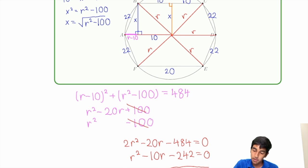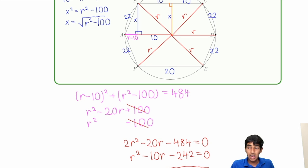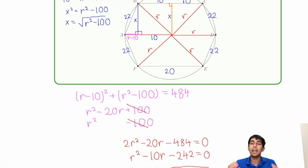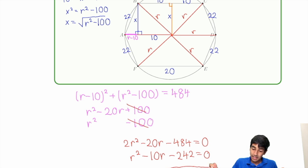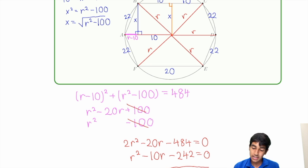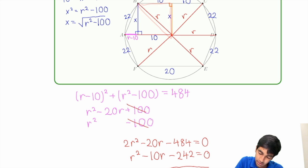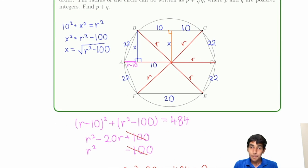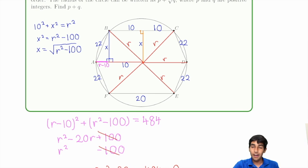The key ideas: in any circle problem, draw all important radii connecting the center to every defined point — that's how you use the circle condition. Don't draw random radii that give no information. The main geometric observation was the isosceles trapezoid, which lets you drop an altitude and find its length in two different ways, yielding an equation in R to solve. Thanks for watching — the next video will cover octagons and a cool pentagon problem.